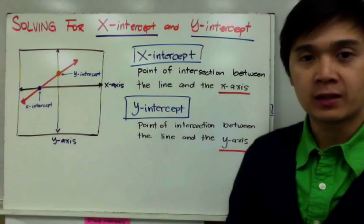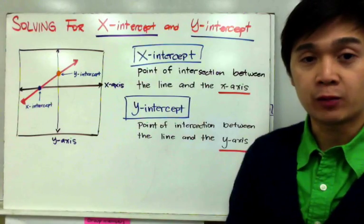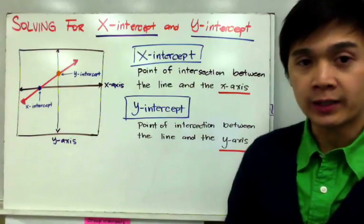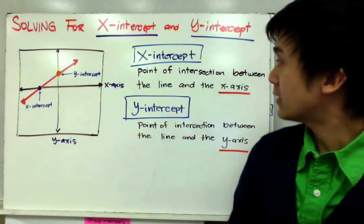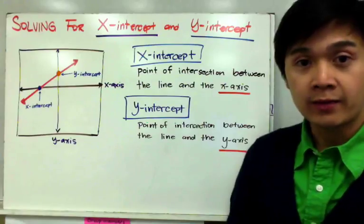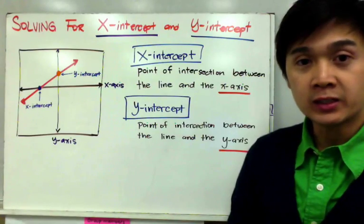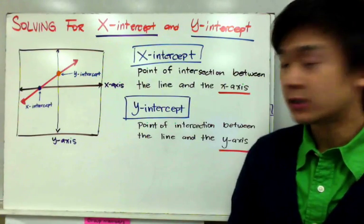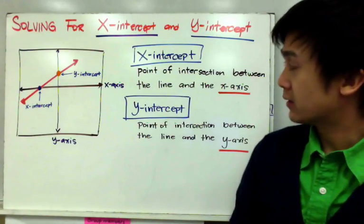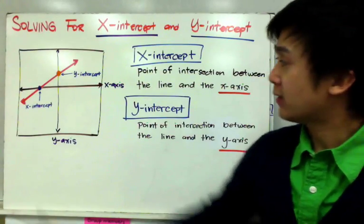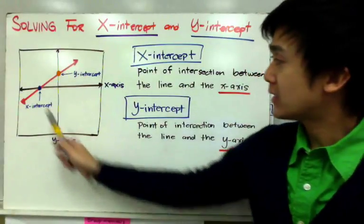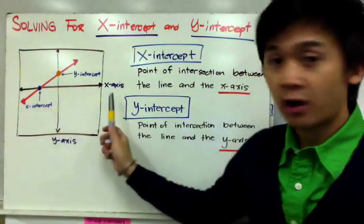There are many ways to graph a linear equation, and one of them is finding the x-intercept and the y-intercept. By definition, the x-intercept is the point of intersection between the line and the x-axis, and the y-intercept is the point of intersection of your line and the y-axis. In the xy-plane, the y-axis is the vertical line and the x-axis is the horizontal line.